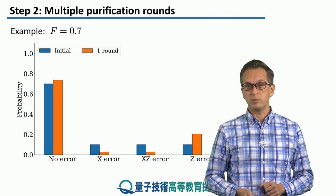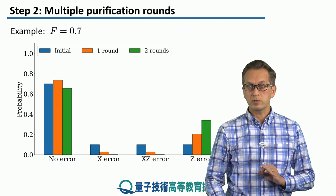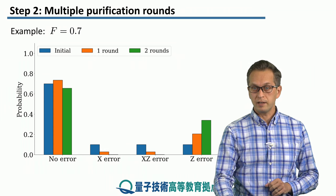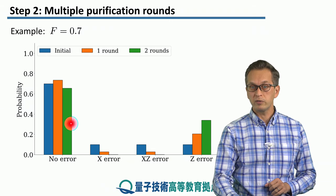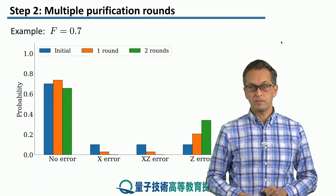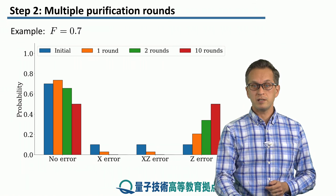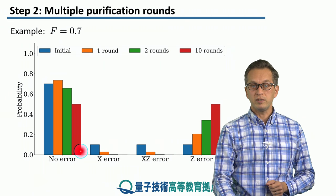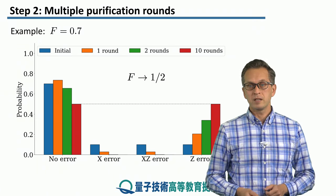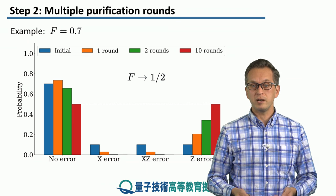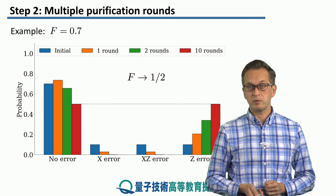After two rounds of purification, the x and xz error probabilities are almost vanishing — nearly 0 — but the z error gets amplified even more. This results in our fidelity actually dropping below our initial fidelity. After 10 rounds, x and xz errors are vanishing, but the fidelity equals the z error probability: they're both equal to 0.5. So after many rounds of purification, the fidelity of the state tends to 0.5, which is less than what we started with — not very good.